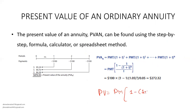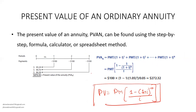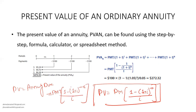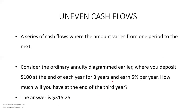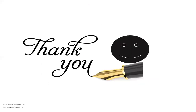For the present value of an ordinary annuity, rearranging gives: PV = PMT × [1 − (1 + i)^(−N)] / I. For annuity due, the present value formula is modified to: PV = PMT × [1 − (1 + i)^(−N+1)] / I. Perpetuities are basically fixed payments for an unlimited period of time, and their present value is found through a specific formula. Uneven cash flows are a series of cash flows where the amount varies from one period to another. Thank you for your attention.